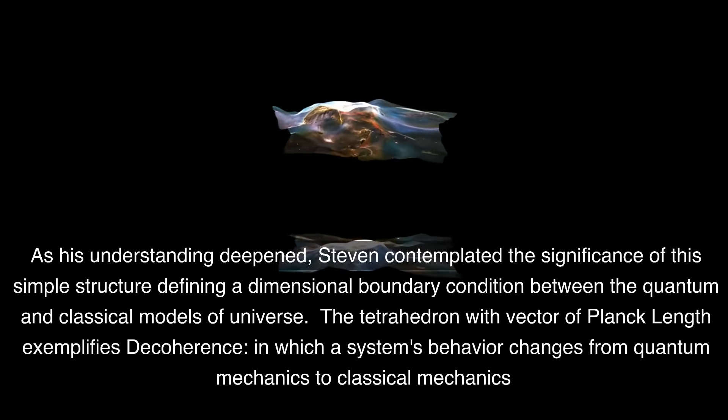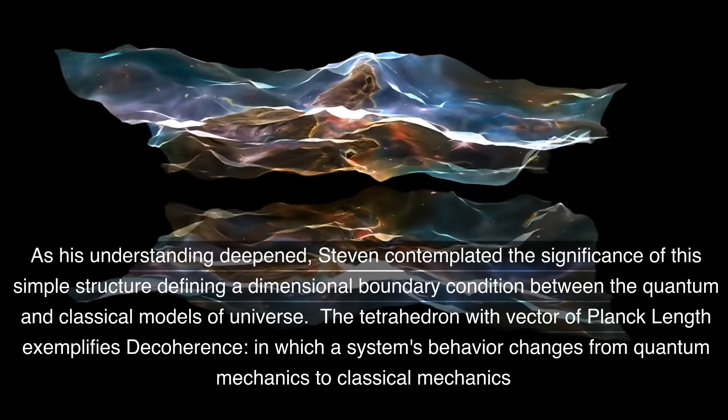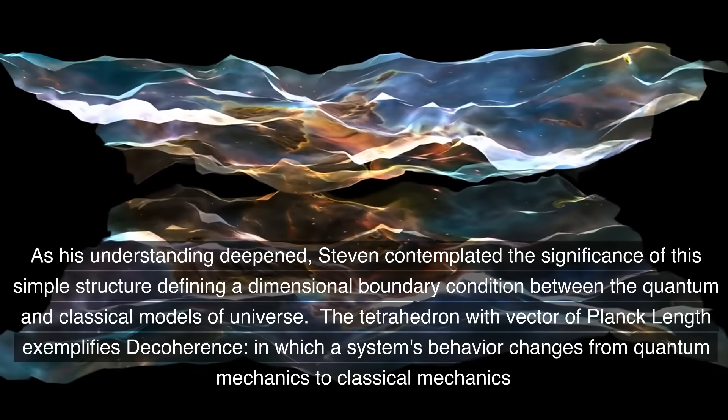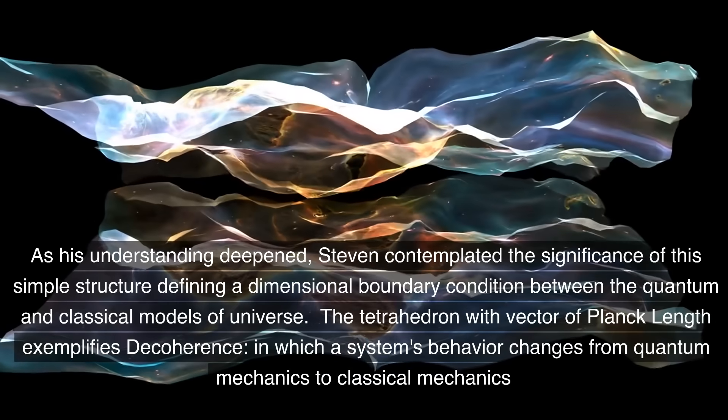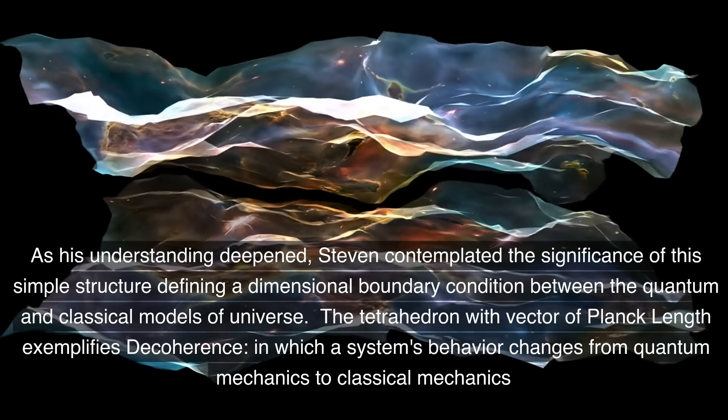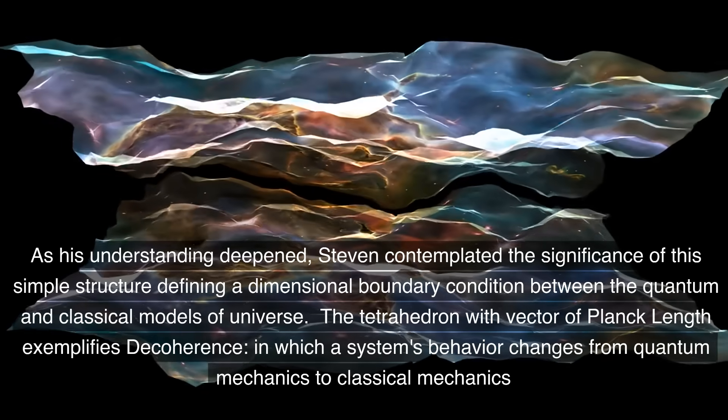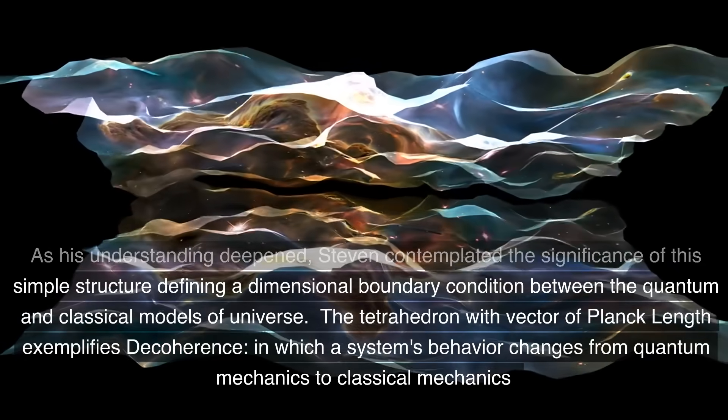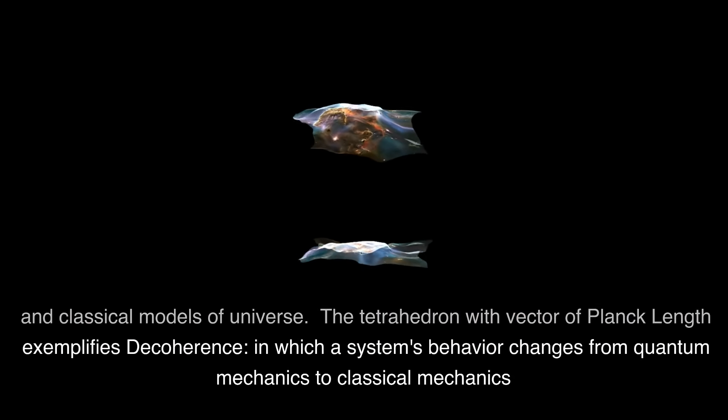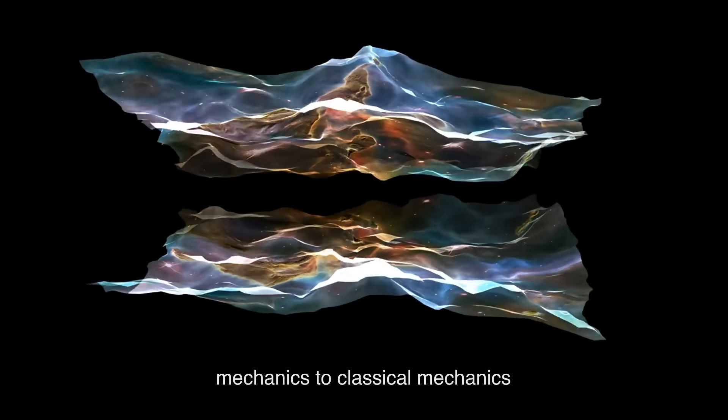As his understanding deepened, Stephen contemplated the significance of this simple structure defining a dimensional boundary condition between the quantum and classical models of universe. The tetrahedron with vector of Planck length exemplifies decoherence, in which a system's behavior changes from quantum mechanics to classical mechanics.